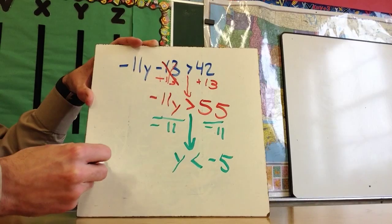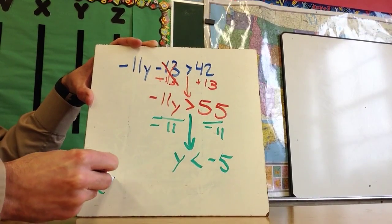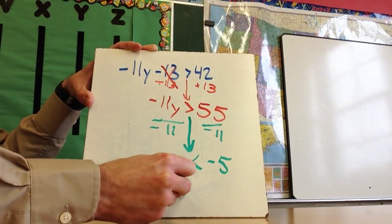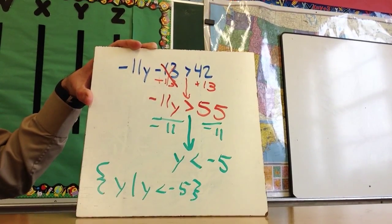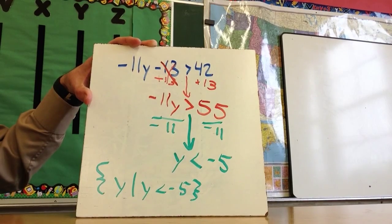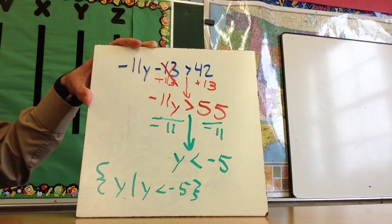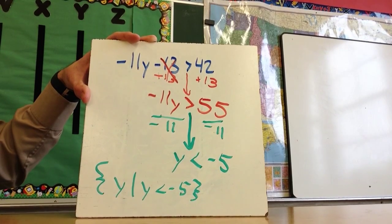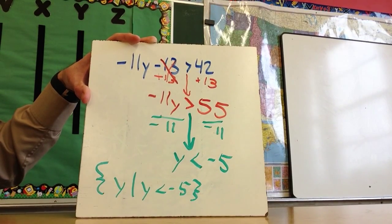If I'm going to write this in proper notation, it is for all values of y, y is less than -5. If I wanted to check my answer, I could do that. Take a number like -6, -7, -8, something that is less than -5.